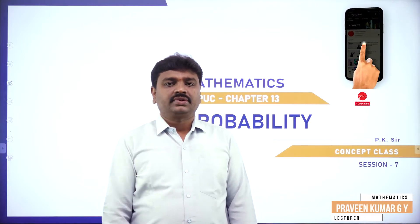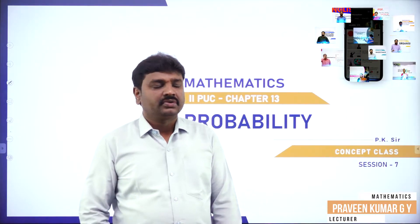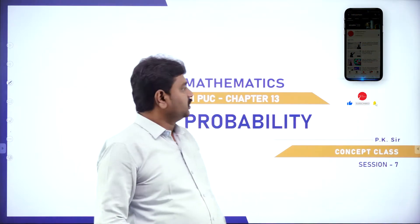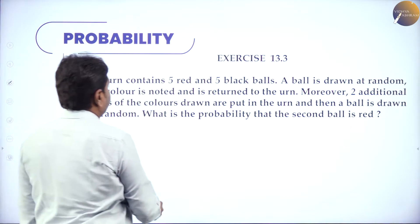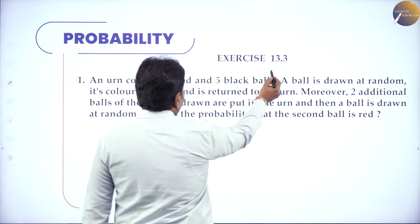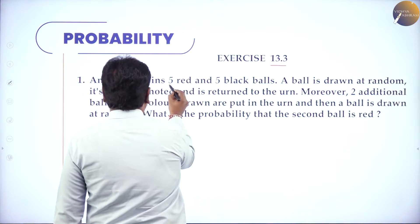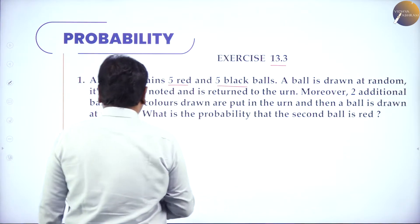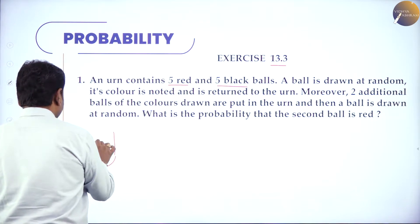Welcome to the session, dear students. Today I will go ahead with the problems of probability, that is Bayes theorem problems. An urn contains 5 red and 5 black balls. So exercise 13.3, starting from the first problem. An urn contains 5 red and 5 black balls. So in a bag or urn, we have a container with 5 red and 5 black balls.